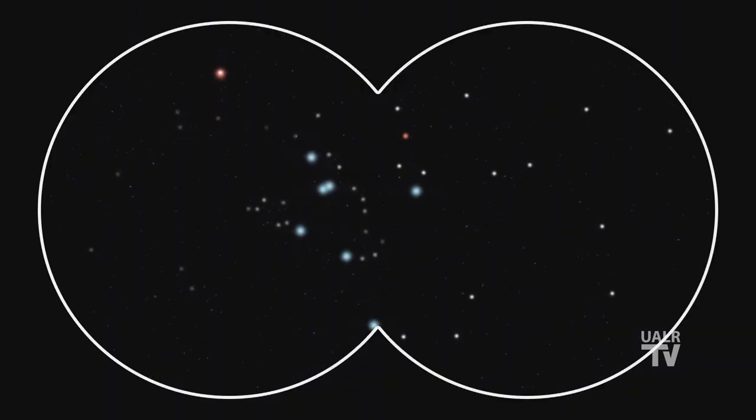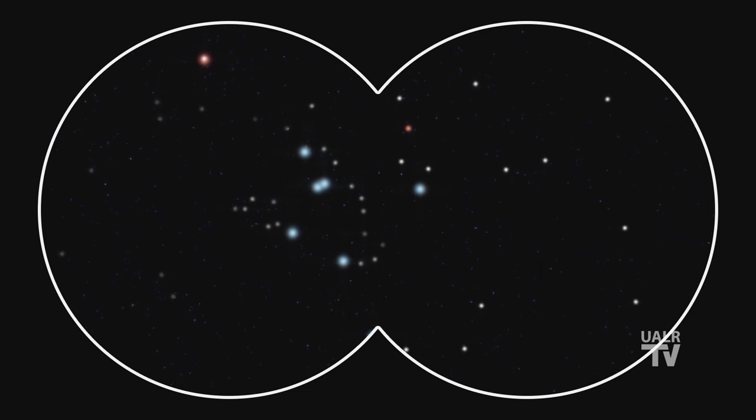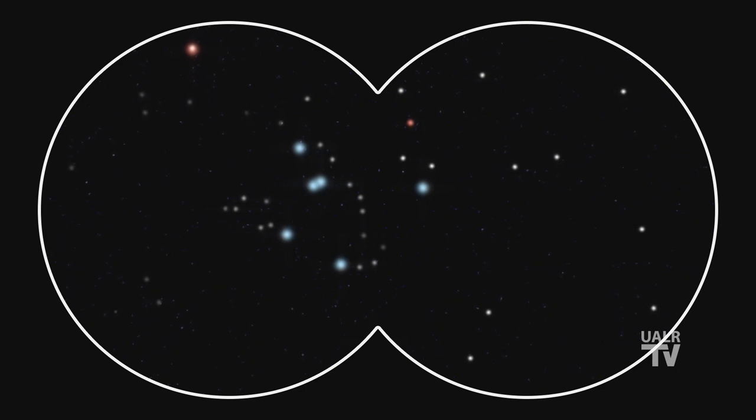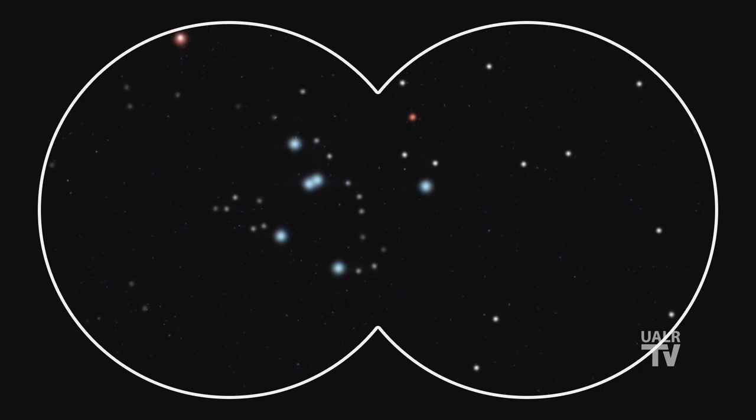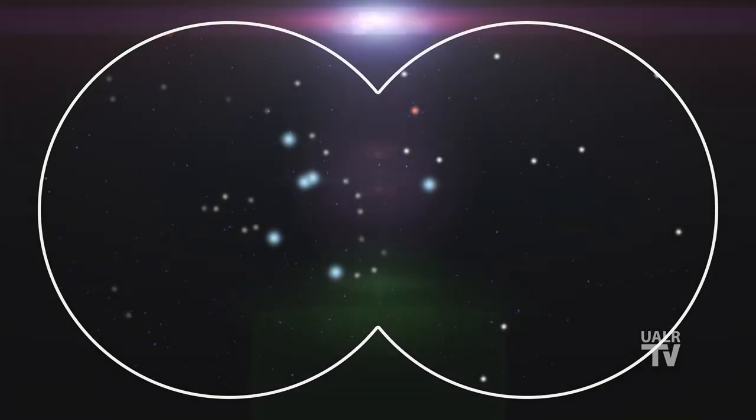With binoculars of any size, this seemingly empty patch of sky suddenly blazes forth with dozens of bright stars shining like diamonds in the dark. Most are white in color, but you'll also see a few that appear red or orange. What's up with those? Well, those are higher mass stars that are reaching the end of their lives. They've depleted their fuel supply of hydrogen in their cores and have now swollen in size to become red giants.